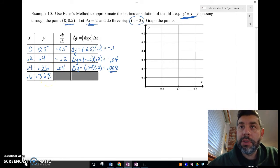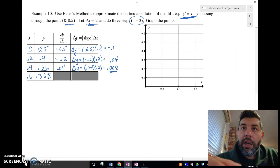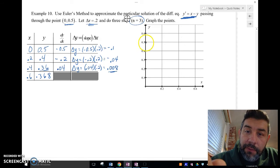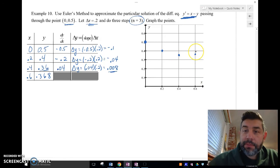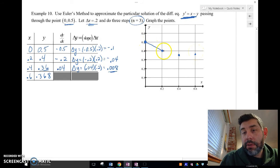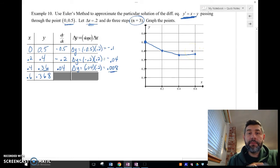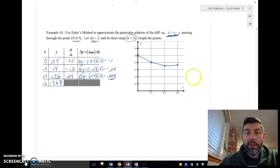So now I'm going to draw, now I'm going to put my points on my graph here. So I'm going to start with 0 and 0.5, which is right here. Then, 0.2 and 0.4, which is right here. Then, 0.4 and 0.36, which is about right there. And 0.6 and 0.38, which is about right there. And I'm going to connect those. Get something that looks like that.